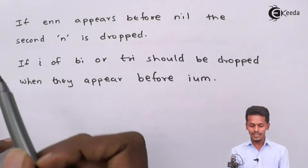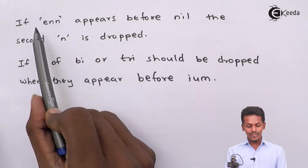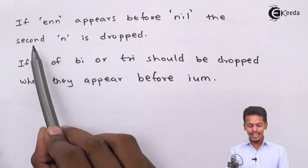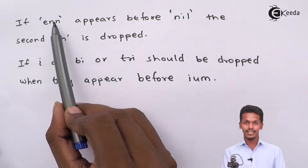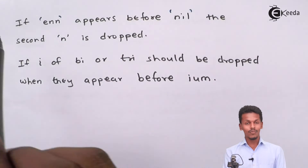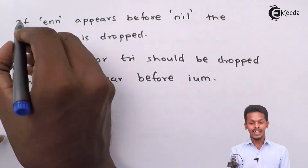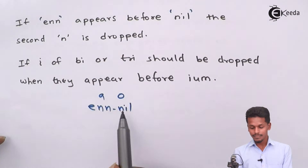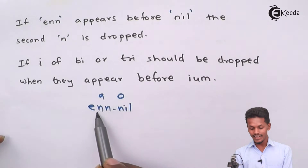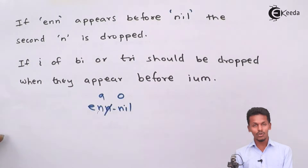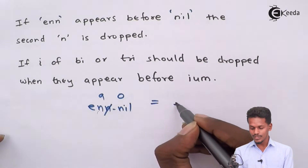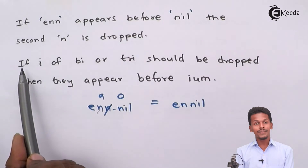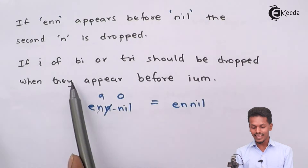There is a special rule: if 'en' — the root for digit 9 — appears before 'nil' — the root for digit 0 — then the second 'n' is dropped. As we can see, 'en' and 'nil' both contain 'n', giving three consecutive n's. The second 'n' would be dropped, so the combined name is written as 'ennilium' becoming 'enilium'.